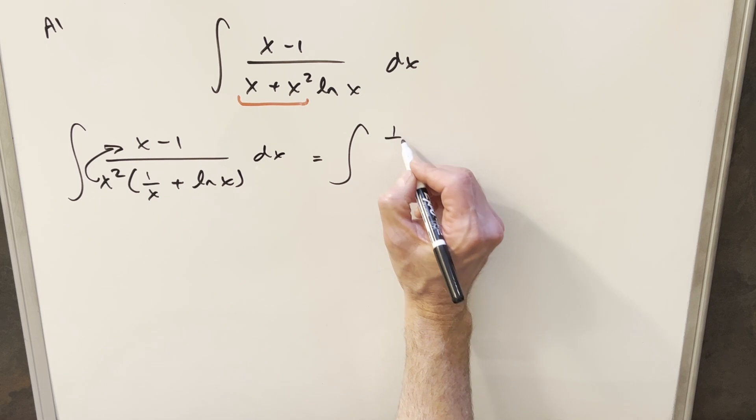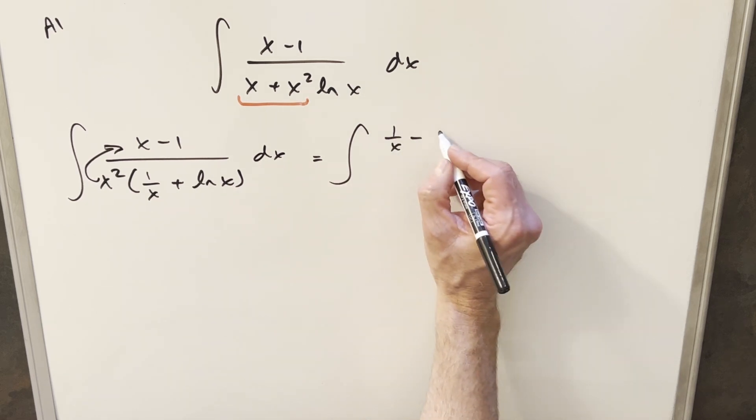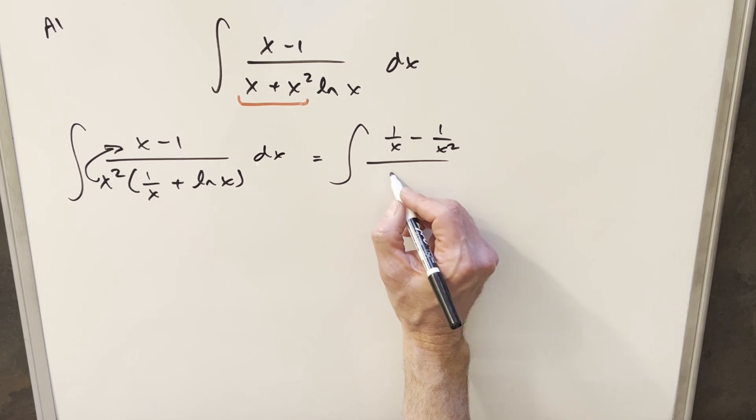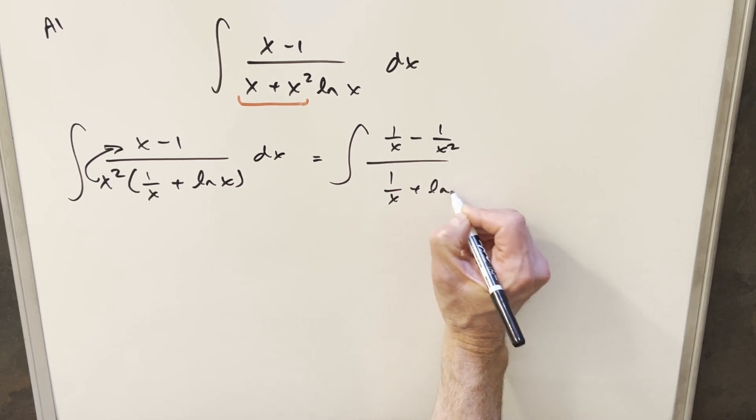Dividing into the x we're going to have 1 over x here and the second term is just going to be minus 1 over x squared and then we'll have 1 over x plus ln x dx.